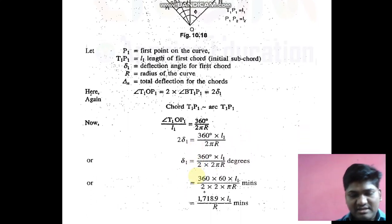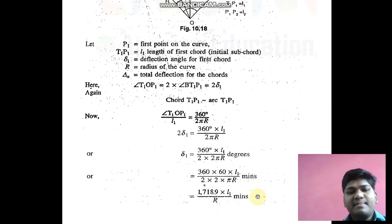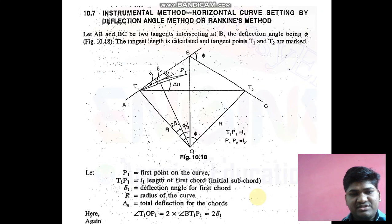To convert degrees into minutes, I multiply by 60. After doing some calculation, the formula for delta1 becomes 1718.9 × L1 / r, and the unit will be minutes. This is a simple derivation, no need to make it complicated.